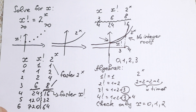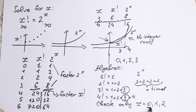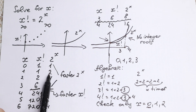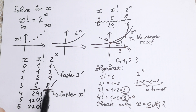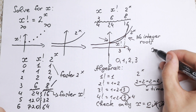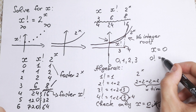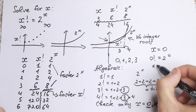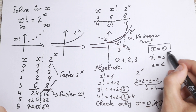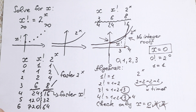Let's check only these values. For x equal to 1: x factorial gives 1, but the exponential gives 2 — reject. For x equal to 2: x factorial gives 2, but 2 to the 2 gives 4 — reject. But for x equal to 0: 0 factorial equals 1, and 2 to the 0 equals 1. So x equal to 0 is our one and only integer root.